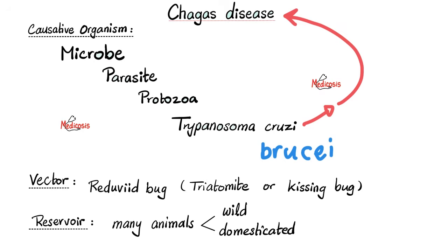But how do I get it? What's the vector? It's the reduviid bug, which is a triatomine, or kissing bug. This insect is going to bite you, then suck your blood and defecate in your wound — what a horrible way to contract a disease.